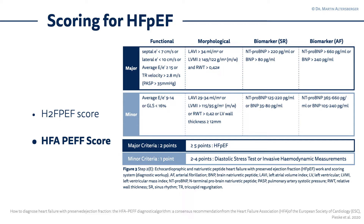One major criteria equals two points. Adding the morphological criteria — for example, the LAVI (left atrial volumetric index) above 34 milliliters per square meter, which is essential for assessing diastolic dysfunction — these are again major criteria for diagnosing heart failure with preserved ejection fraction. You would also need an elevated biomarker, specifically NT-proBNP or BNP above certain levels, to confirm it is truly HFpEF.